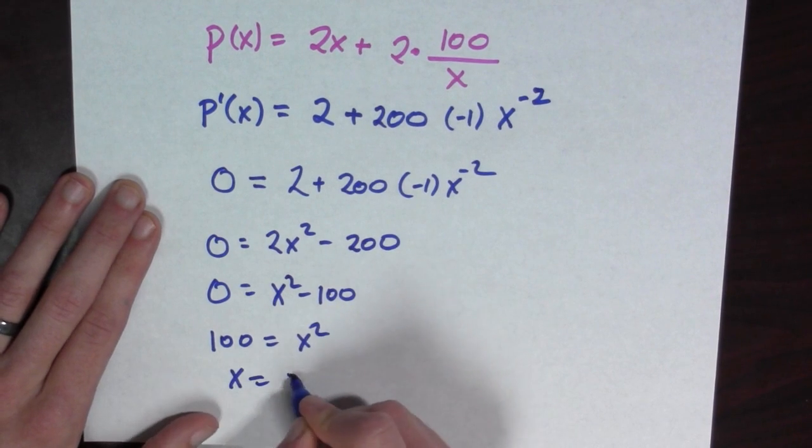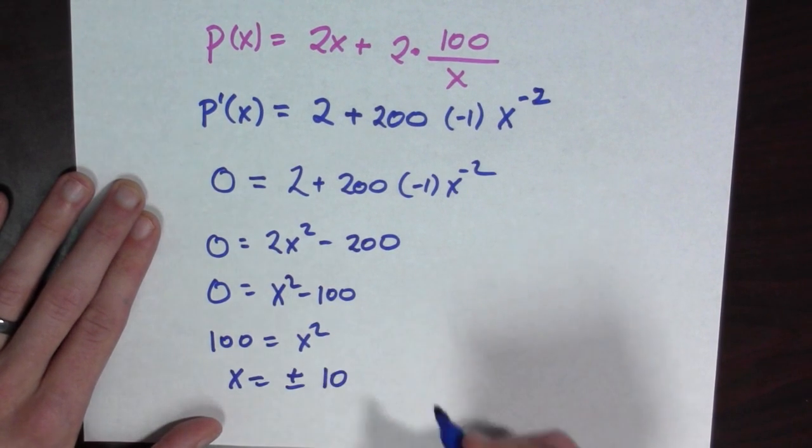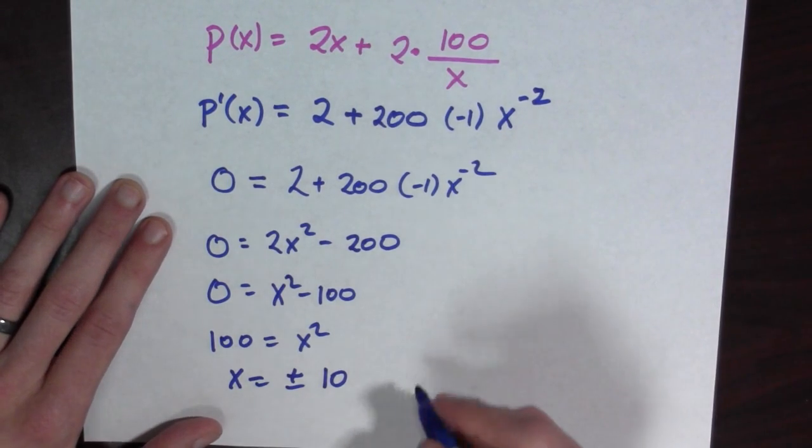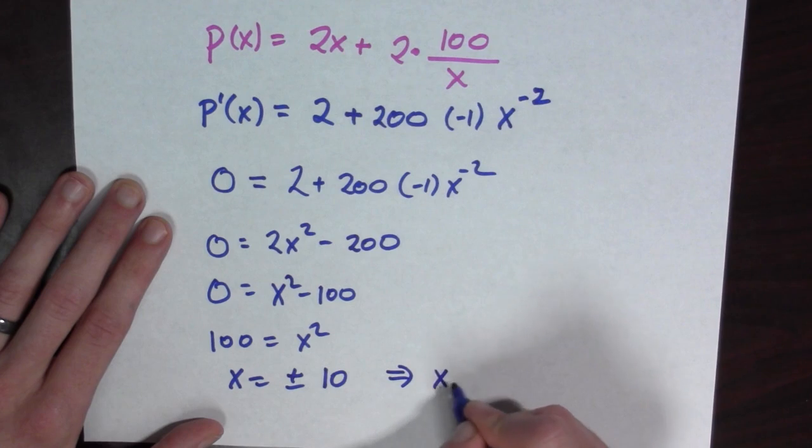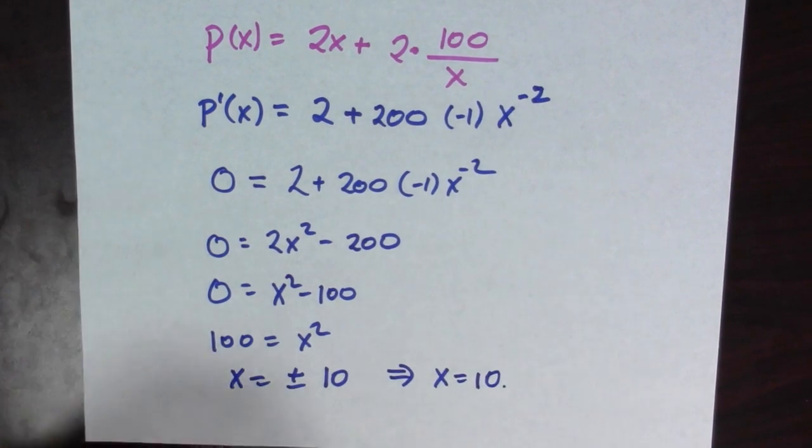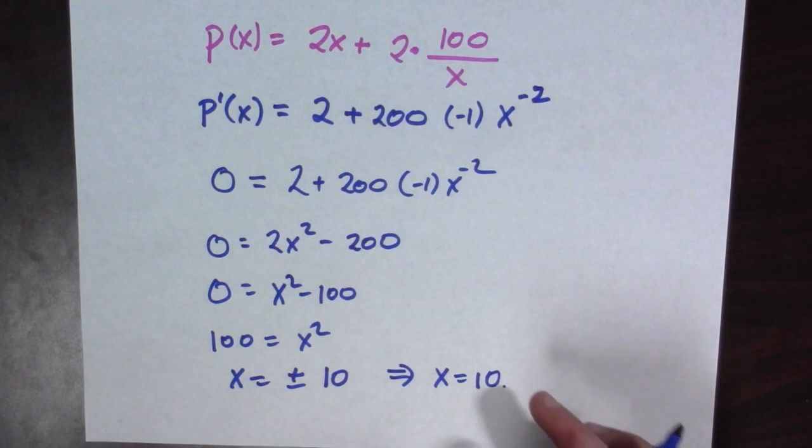x is equal to plus or minus 10. But since we're assuming that x is greater than 0, that implies that x is equal to 10 is a solution. So this is a good choice. This is one of our critical points. And since there are no other critical values we need to check for, let's see if this is a maximum or a minimum.